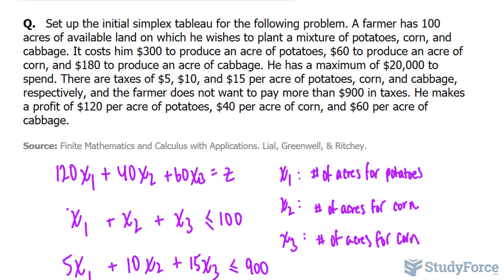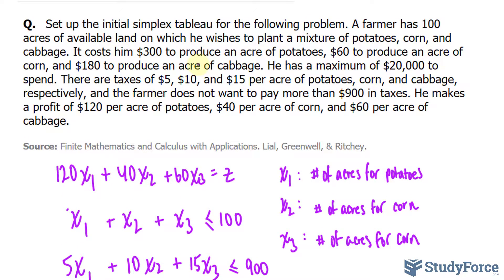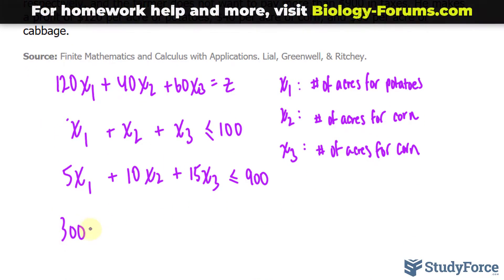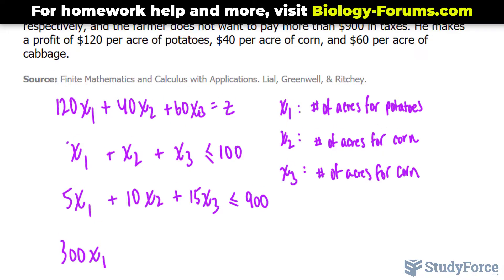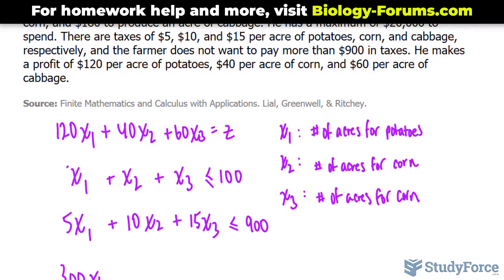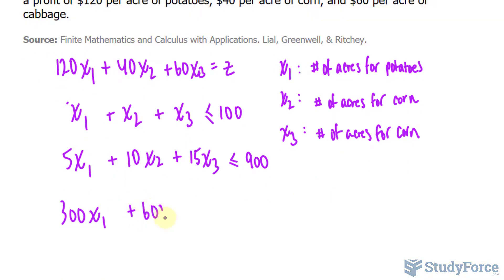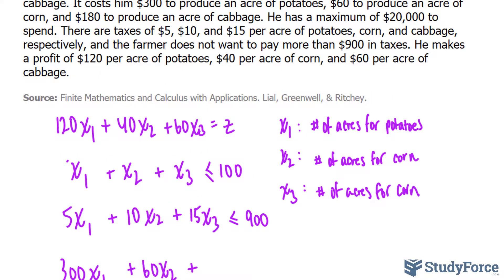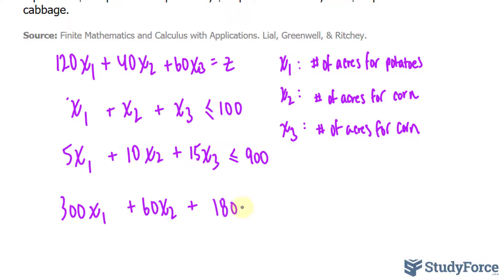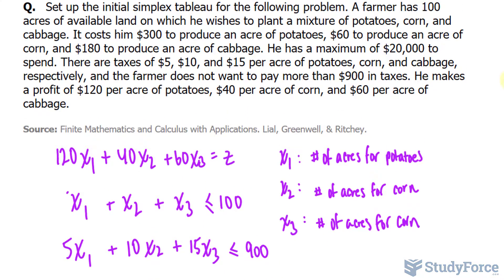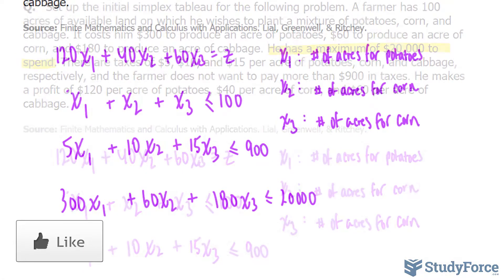The last constraint refers to the cost per acre. We use the information provided here. It costs him $300 for the potatoes, so $300 times the acres of potatoes, 60 to produce the corn, plus 60 x sub 2, plus 180 for the cabbage. And that, according to the question, cannot exceed $20,000. I'll highlight that information for you.